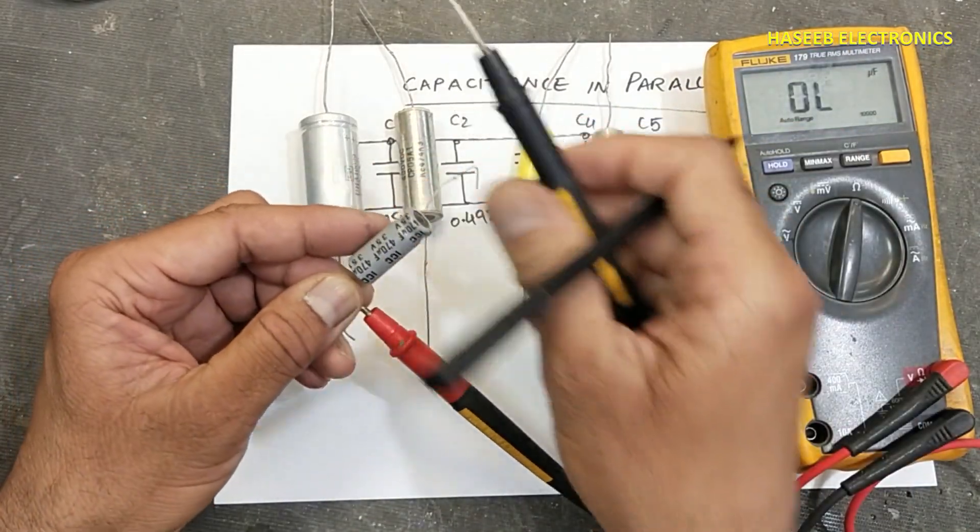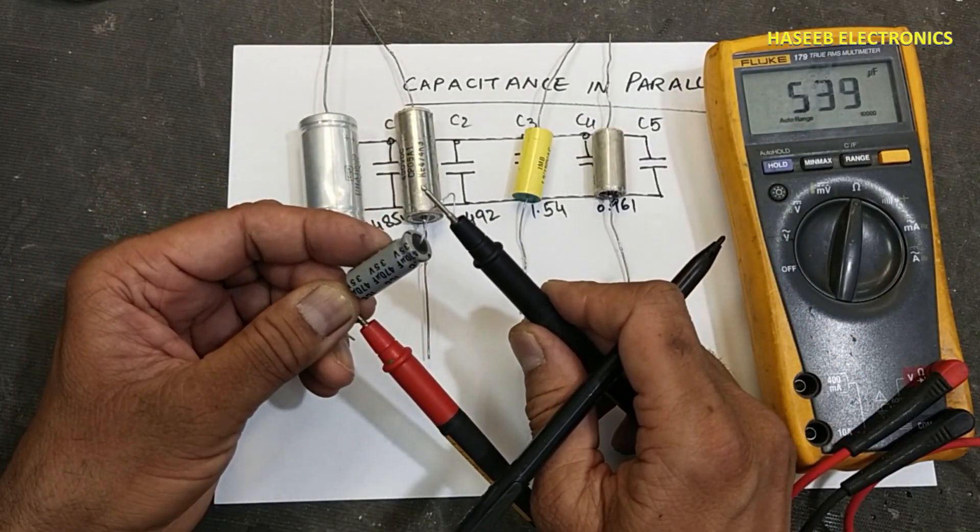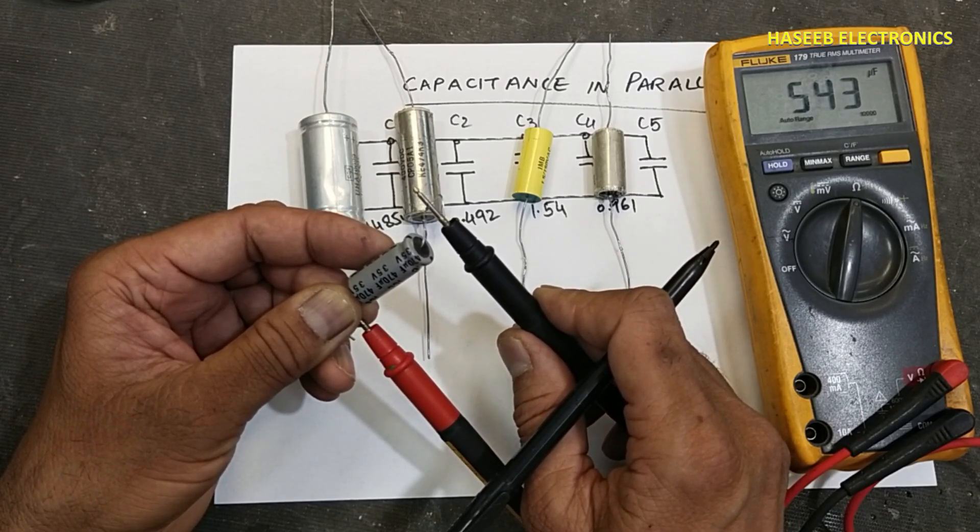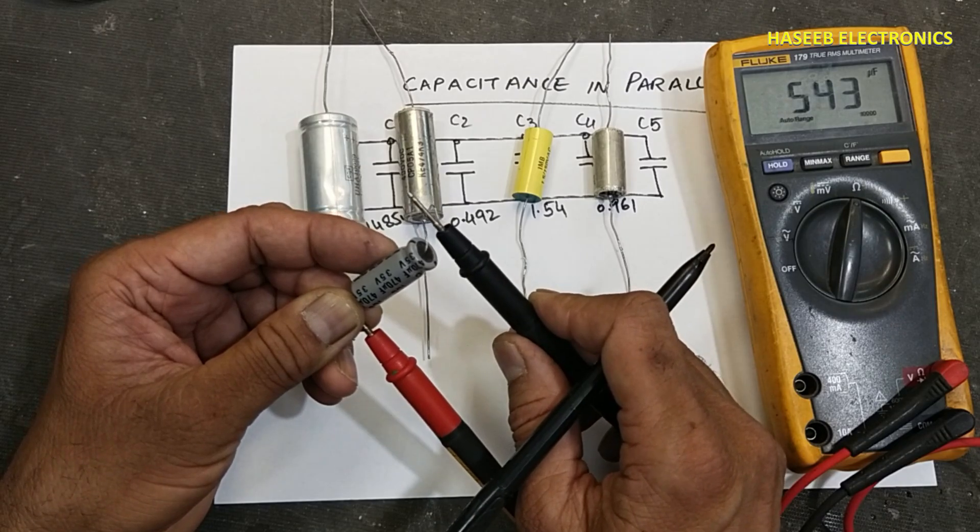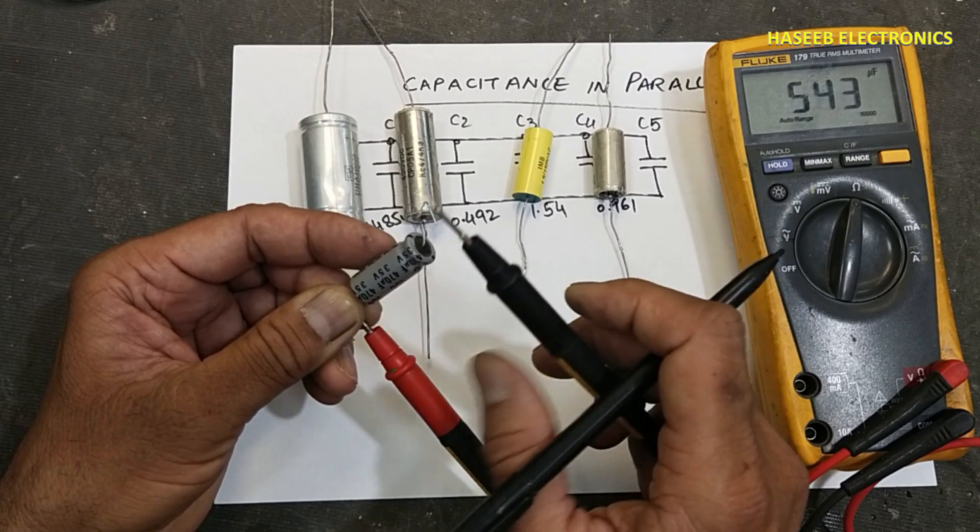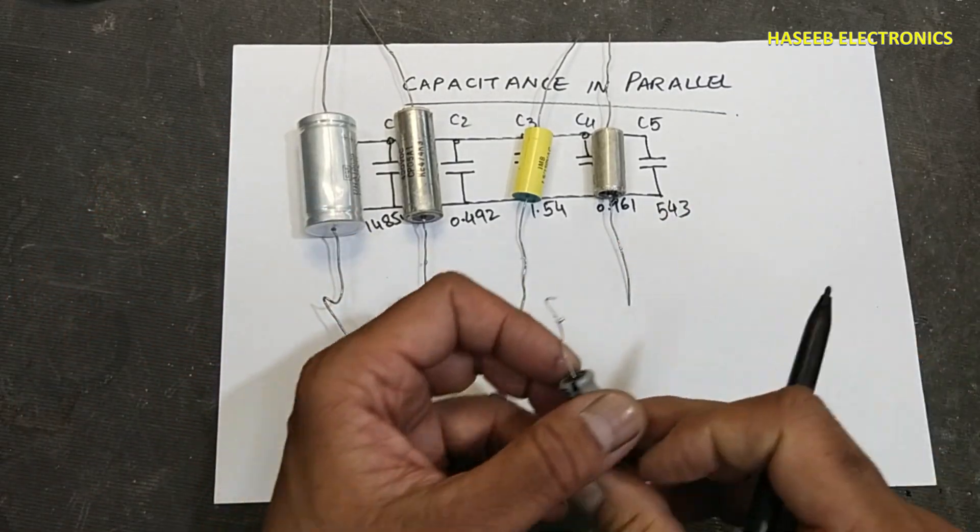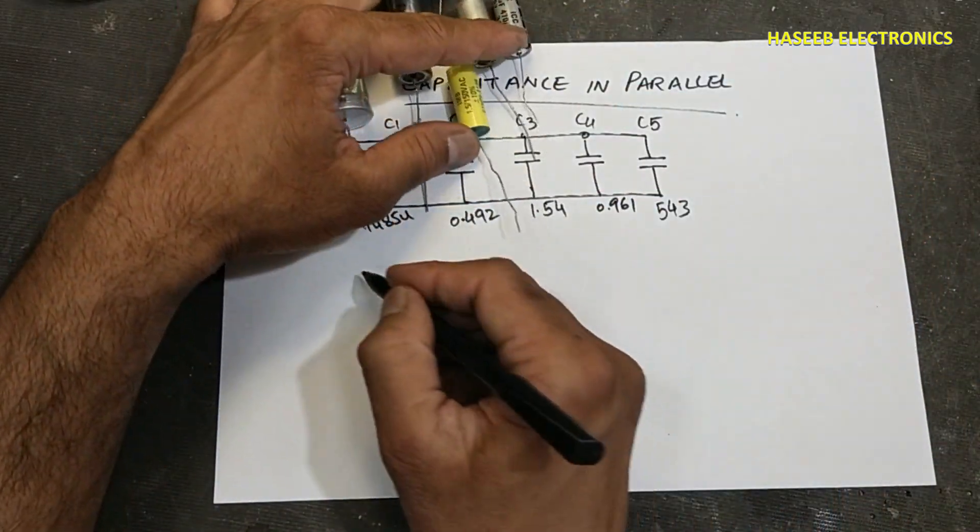The last is 470. It is 543 microfarad. Let's calculate CT.